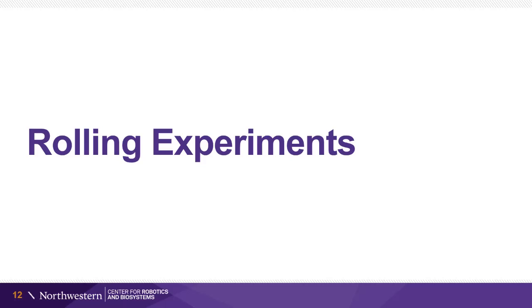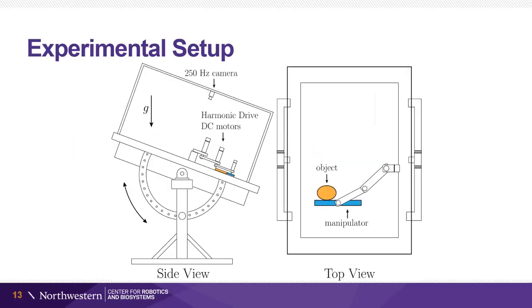We now demonstrate our experimental results. The experimental setup consists of a planar 3R robot on an air table. The manipulator is shown in blue, and the object is shown in orange. An overhead camera tracks the object at 250 hertz.